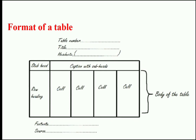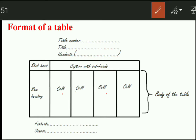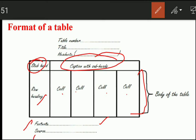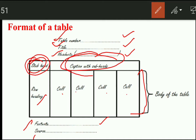Now we will discuss the format of a table. This is a complete format. We have given the row headings — the stubs — and the captions. This is our complete body. We have given the footnote and the source of data. We have given the table number, and the title with the head note. So the format is: table number, title, head note, stubs (row headings), captions (column headings), body, footnote, and source.